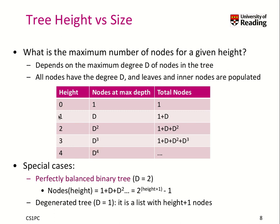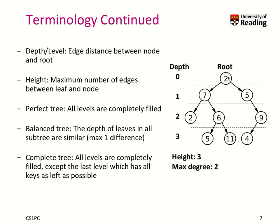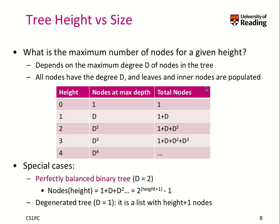Let's verify at a height of 1. We have 2 to the power of 1 plus 1, which is 2 to the power of 2, that is 4 minus 1 equals 3. Looking at our tree here, if we have a maximum height of 1, we have 3 nodes. That seems appropriate and correct.